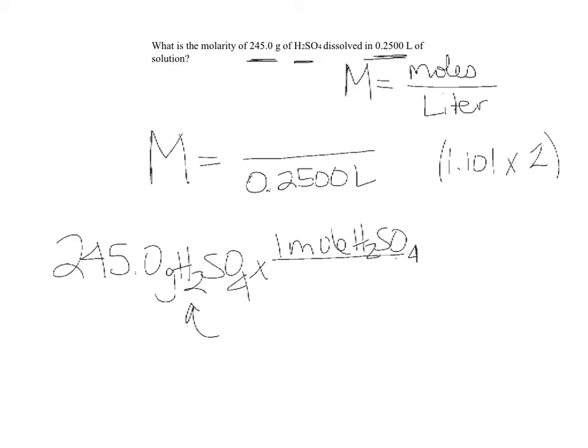Then sulfur. If we look at the periodic table, we will see that sulfur weighs 32.07 grams per mole. There is one mole of sulfur in one mole of H2SO4, so we don't need to multiply that by anything.